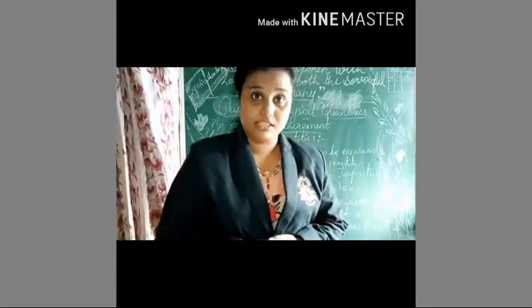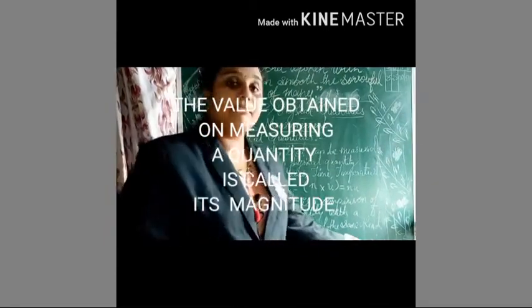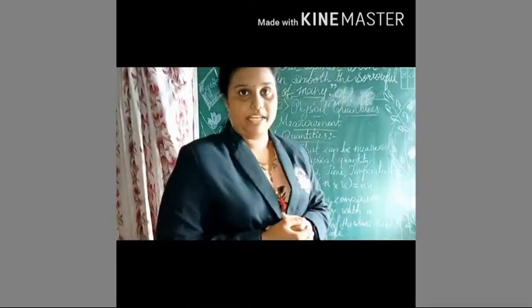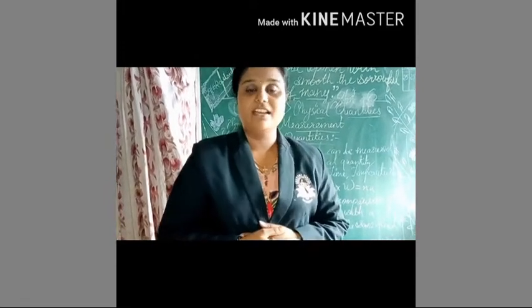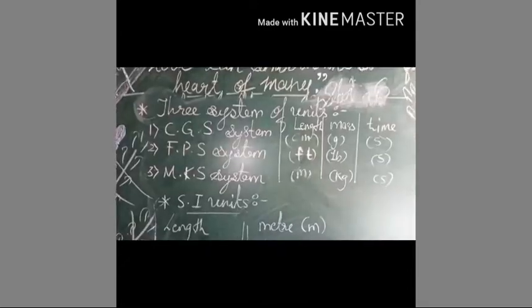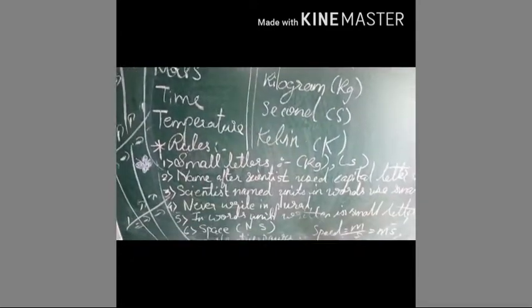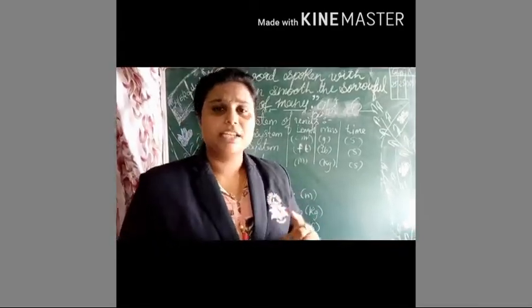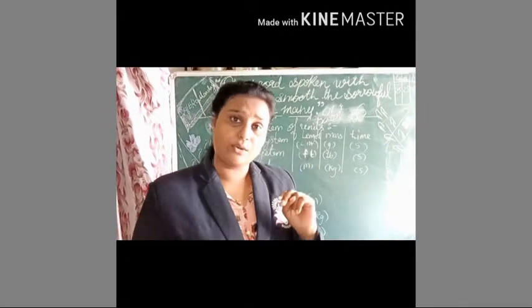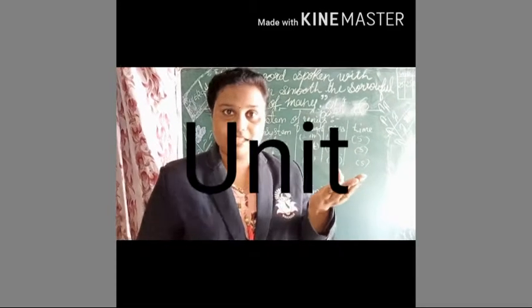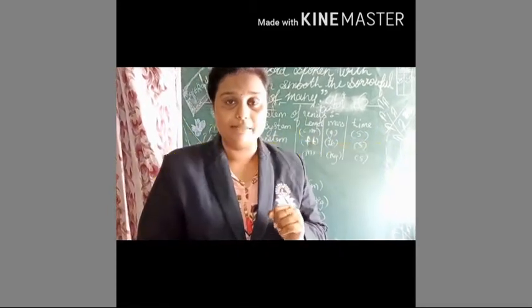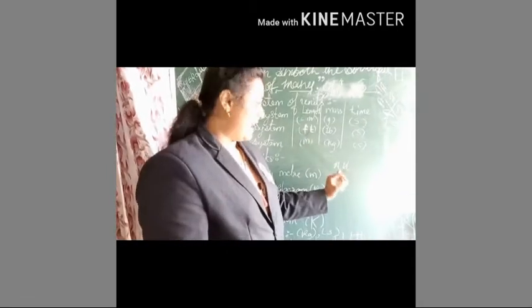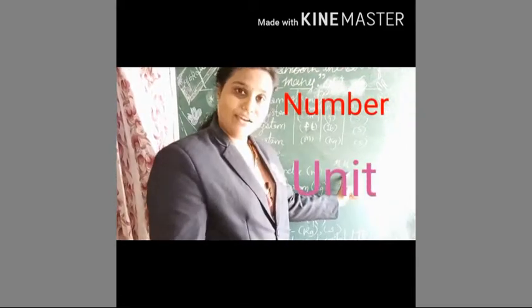Now we have to learn about magnitude. The value that can be obtained on measuring a quantity is called its magnitude. To find out a measurement, you require two basic things: a number and a unit. Therefore, we write it as n × u, where n stands for number and u stands for unit.